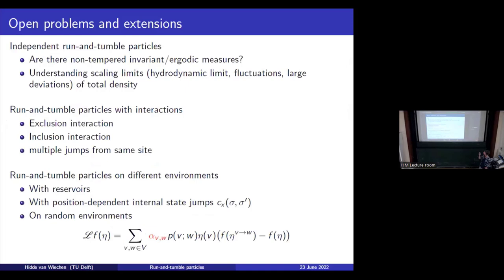At the end, some open problems and possible extensions. First, we characterized all the tempered ergodic measures, but the question remains: are there also non-tempered ergodic measures? Second, we want to understand the scaling limits of the total density in more general cases — that is what Frank and I are working on right now. For possible extensions, we can look at actual interactions: adding exclusion or inclusion interactions, multiple jumps at the same time, or random environments. For example, we can add reservoirs to the system, which was also seen today. Also, position-dependent internal state jumps are interesting but tricky, because our successful coupling completely falls apart — we first couple internal states, but if internal state changes depend on position, we can no longer do that step independently of position.